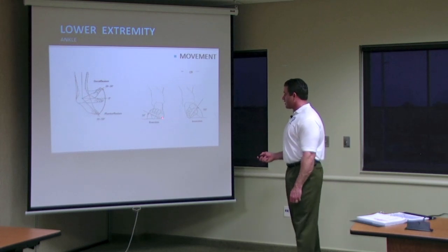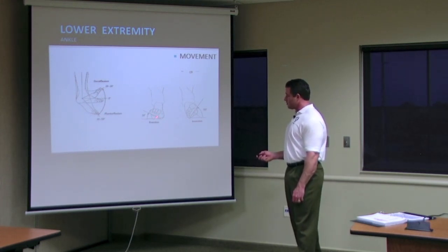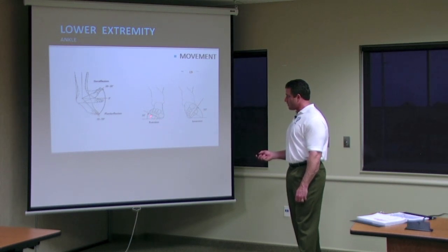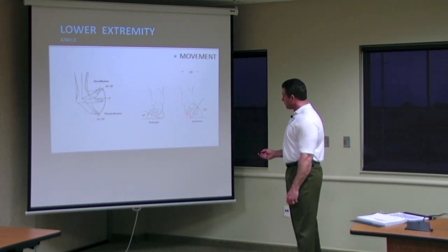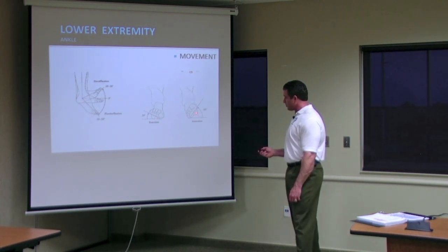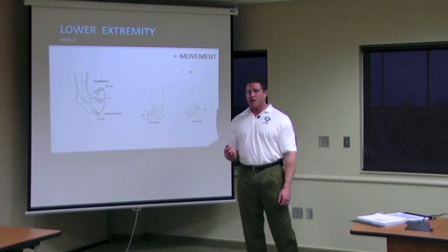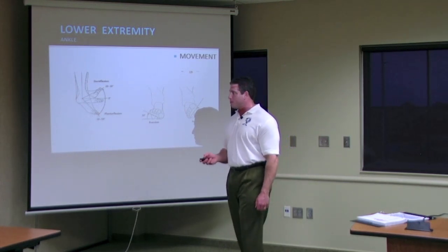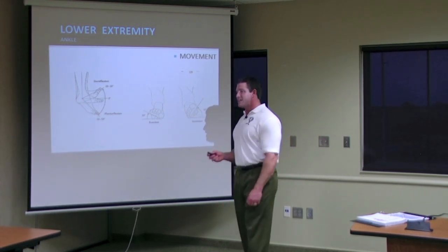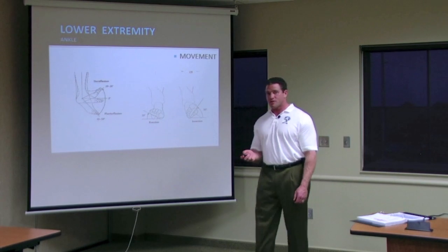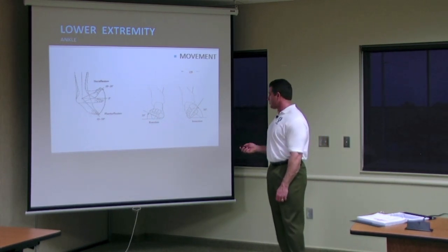If your ankle rolls inward and the sole of the foot rolls outward, we call that eversion. If the sole of the foot rolls inward, we call that inversion. Most ankle sprains from twisting an ankle are going to be rolling the foot in the inversion direction, which would be supination.